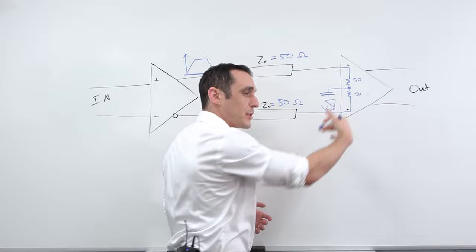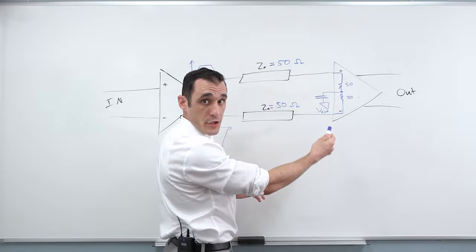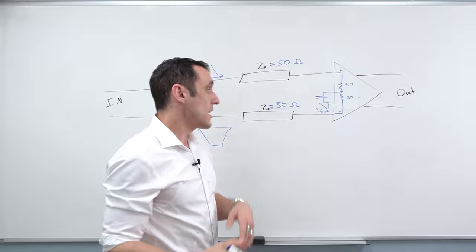An important thing to remember about termination: if you have on-die termination for your interface or component, you don't need to actually build this circuit. I think it's easy to look at some of these diagrams and think you have to build out the receiver circuit yourself — that's not necessarily the case. Make sure to check your datasheets for your components; it'll tell you if you need termination or if on-die termination is already applied.